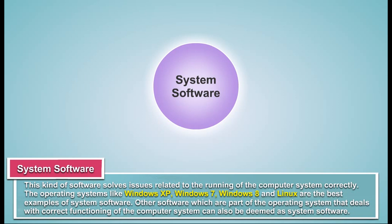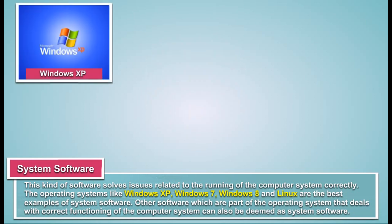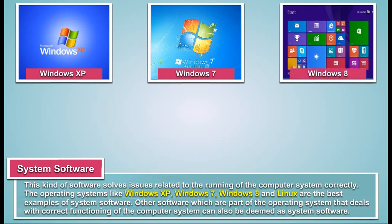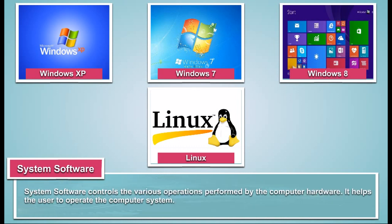System Software is a kind of software that solves issues related to the running of the computer system correctly. Operating systems like Windows XP, Windows 7, Windows 8, and Linux are the best examples of system software. Other software which are part of the operating system that deals with correct functioning of the computer system can also be deemed as system software. System software controls the various operations performed by the computer hardware and helps the user to operate the computer system.